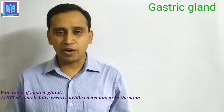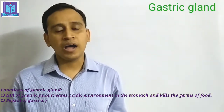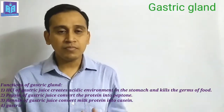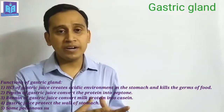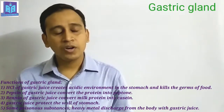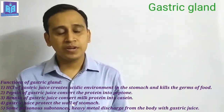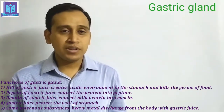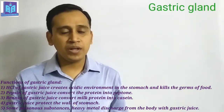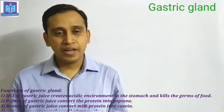The functions of gastric juice: hydrochloric acid of gastric juice creates an acidic environment in the stomach, and also kills the germs of food. Number two, pepsin of gastric juice converts protein into peptones. Renin of gastric juice converts milk into casein. Gastric juice also protects the wall of the stomach. Some poisonous substances and heavy metals are also discharged through gastric secretion.